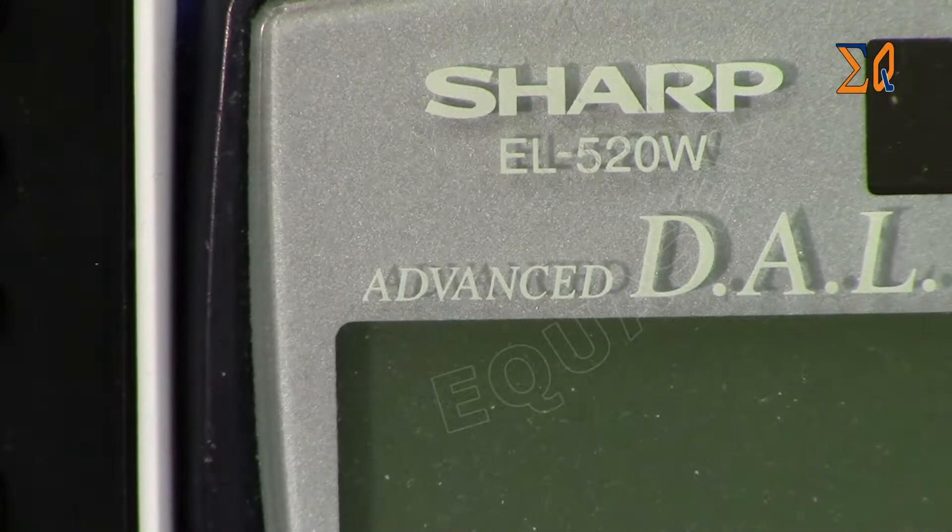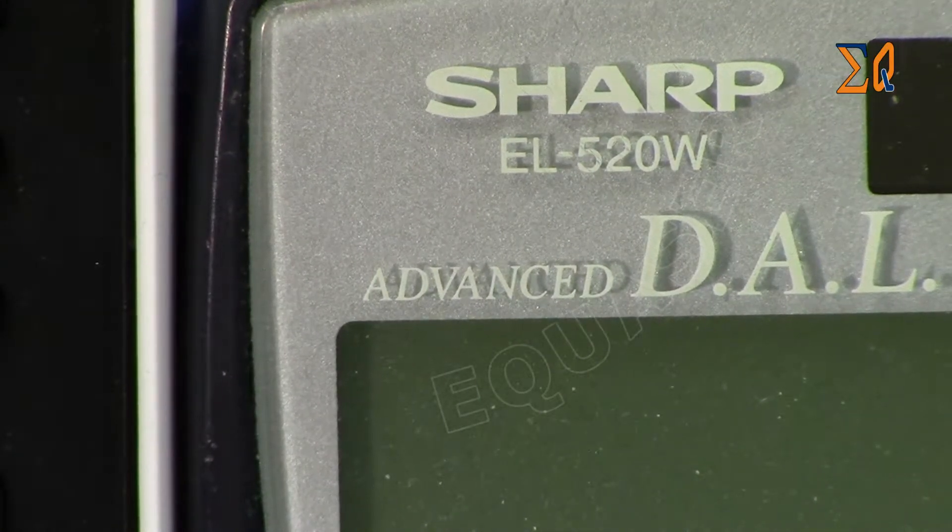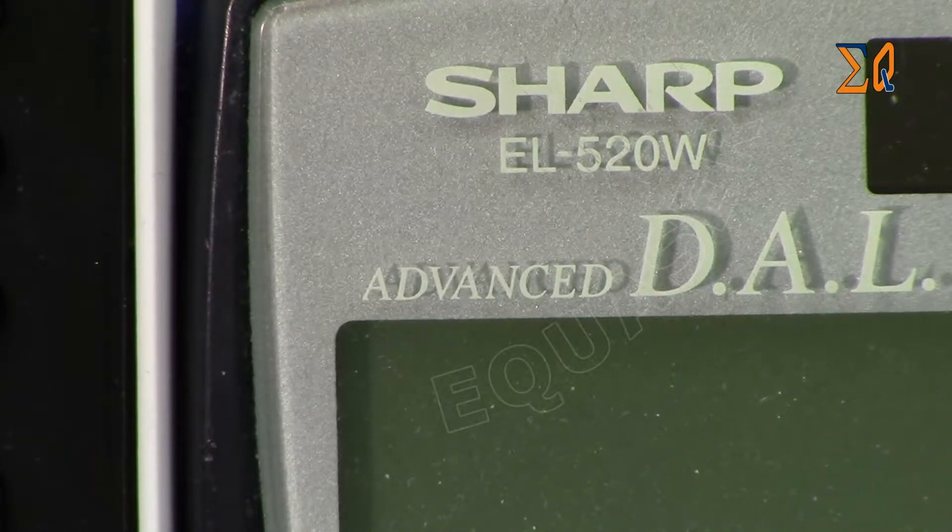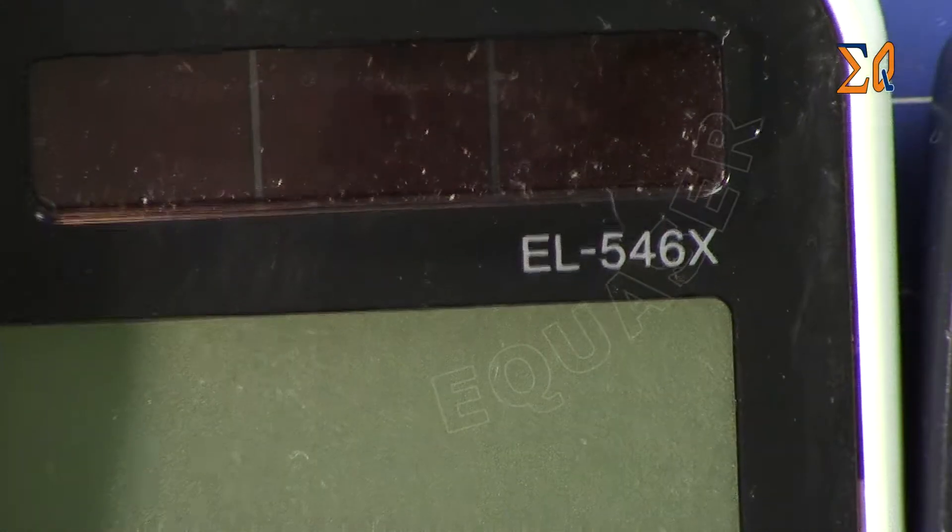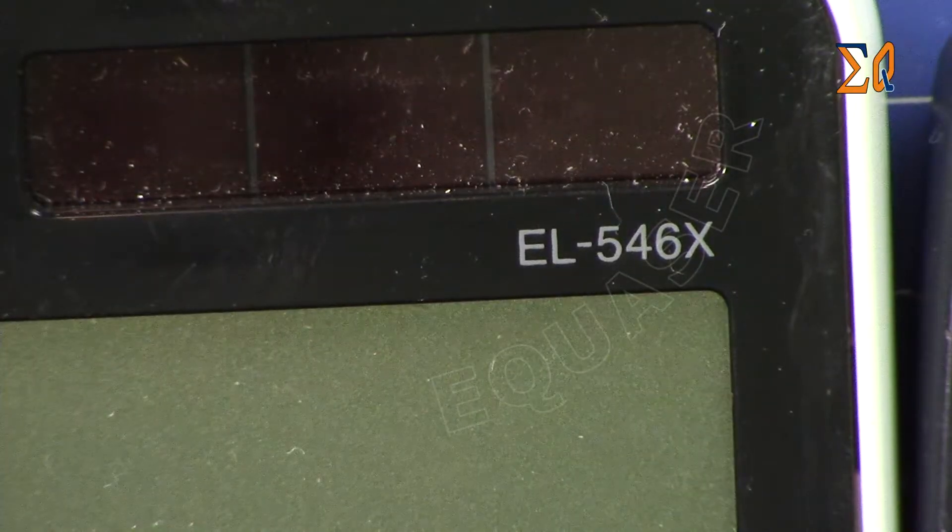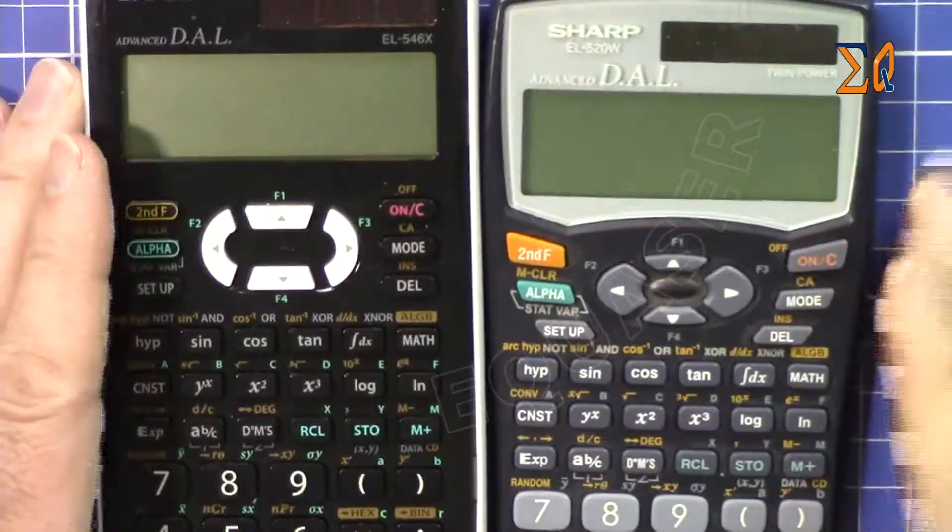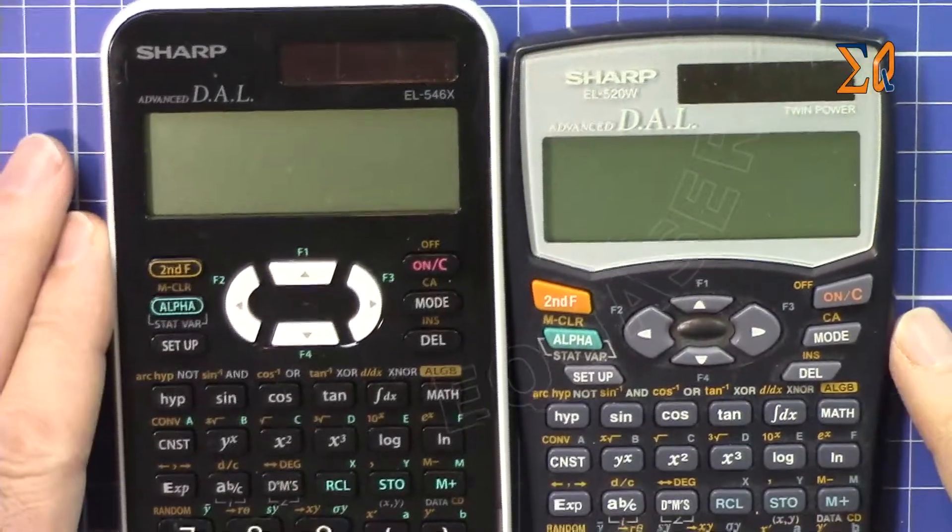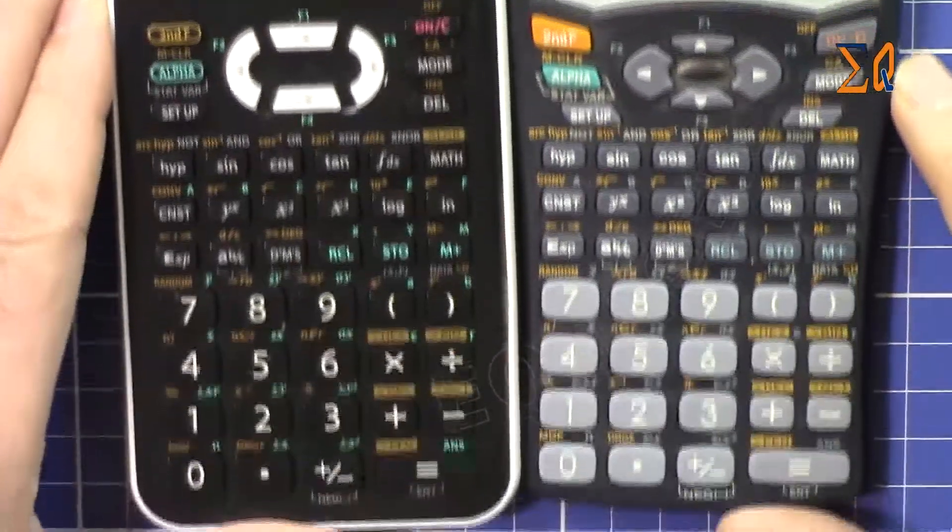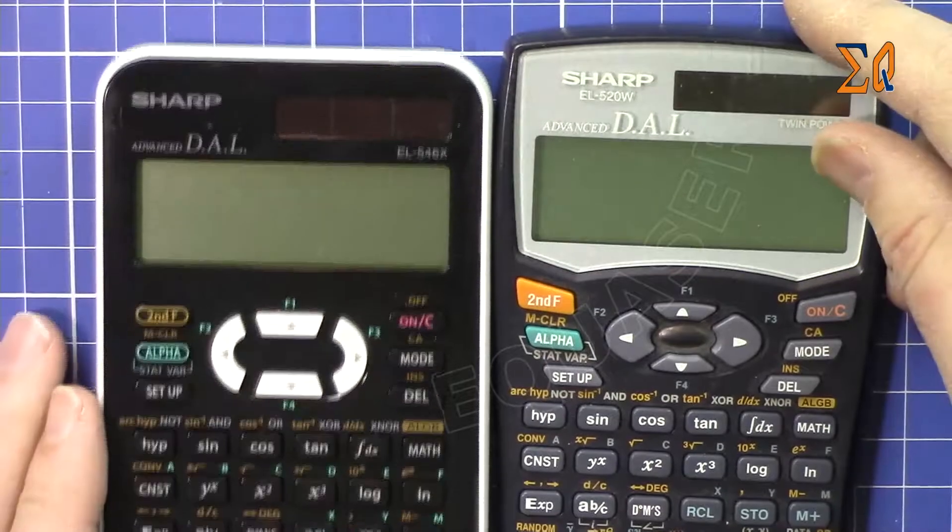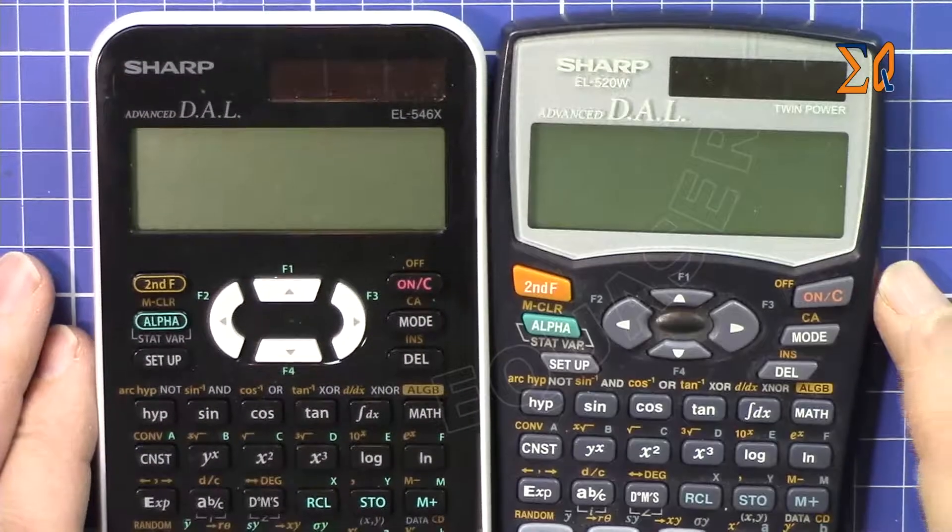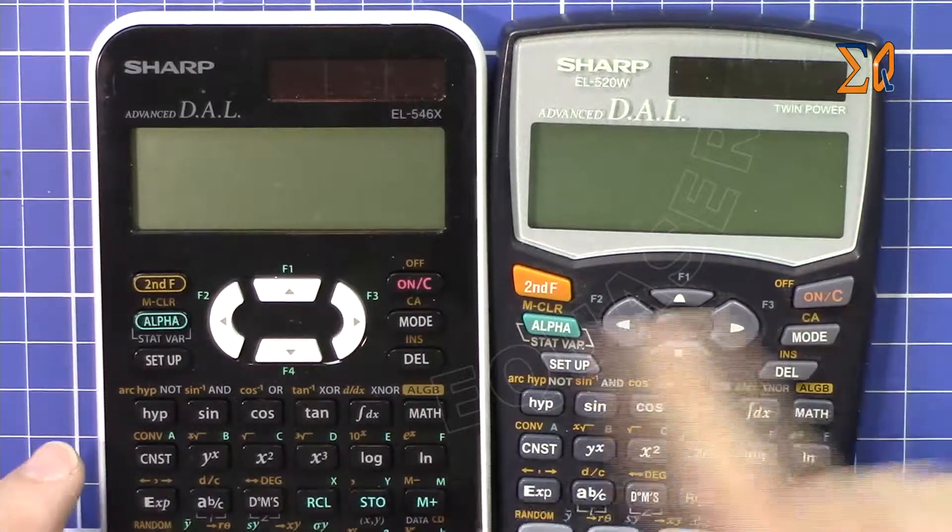Hi, welcome to Equator. In this video we are going to see what is the difference between SHARP EL520W and the SHARP EL546X calculator. Here are both of them. Both have solar panels and all the switches are exactly the same.